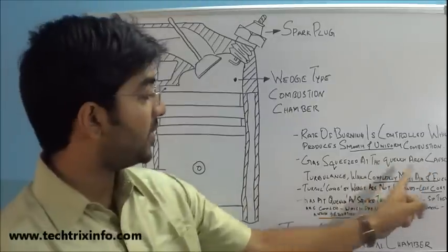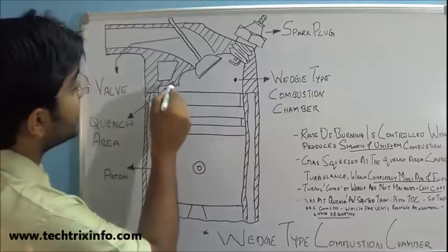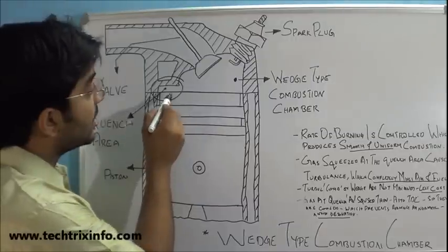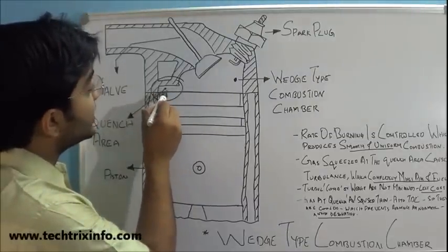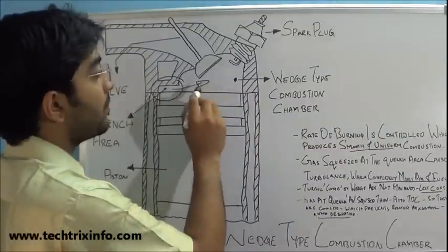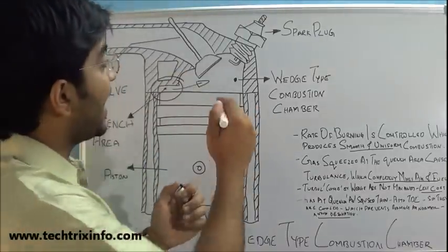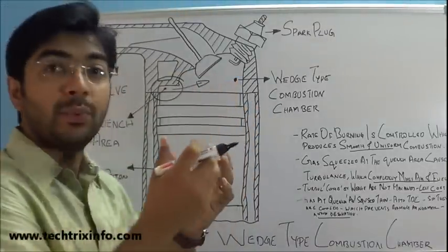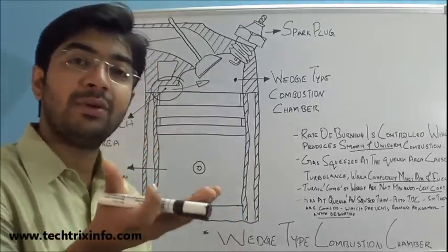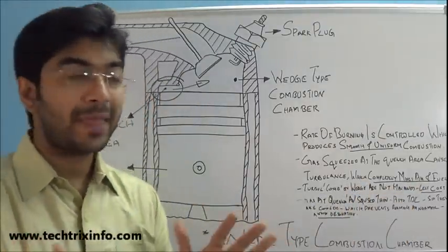How is the complete mixing of the air-fuel achieved? The quench area causes a turbulence which results in the complete mixing of the air-fuel. When the piston reaches the top dead center, the air-fuel mixture gets squeezed through this small area and is pumped towards the bigger area in the wet state combustion chamber. That turbulence perfectly mixes the air-fuel mixture, giving us a very rich and completely mixed air-fuel mixture for effective combustion.